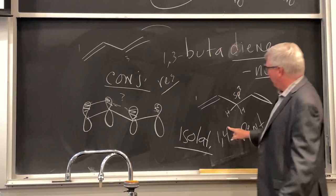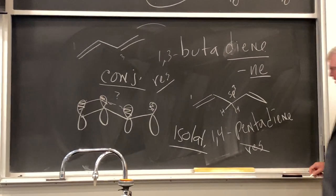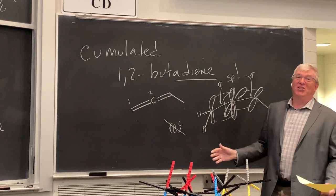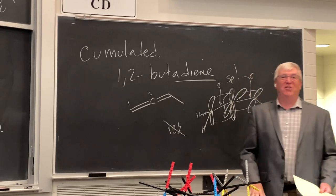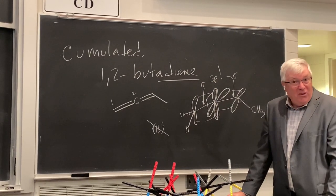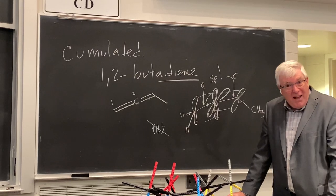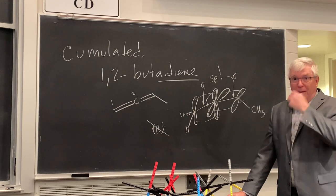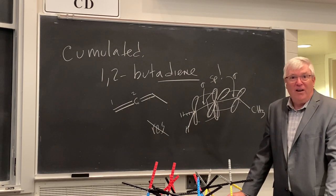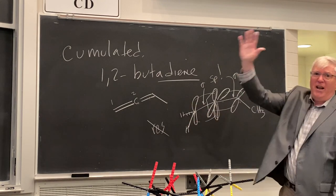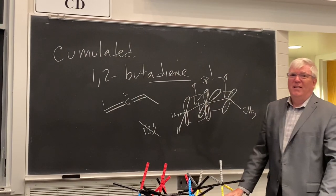To summarize the three types: conjugated dienes like 1,3-butadiene are resonance-stabilized with the double bonds communicating; isolated dienes have no resonance between the two double bonds; accumulated dienes also have no resonance. We'll leave it there and pick up with reactivity next time. Make sure you're reading ahead and studying. These first two videos are for Monday, June 22nd. See you next time.